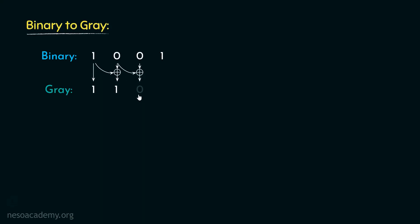Continuing the same process: we select the next pair and perform XOR — since the bits are the same, we end up with 0. Then selecting 0 and 1 and performing XOR, we obtain 1. So the gray equivalent of the binary pattern 1 0 0 1 is 1 1 0 1.